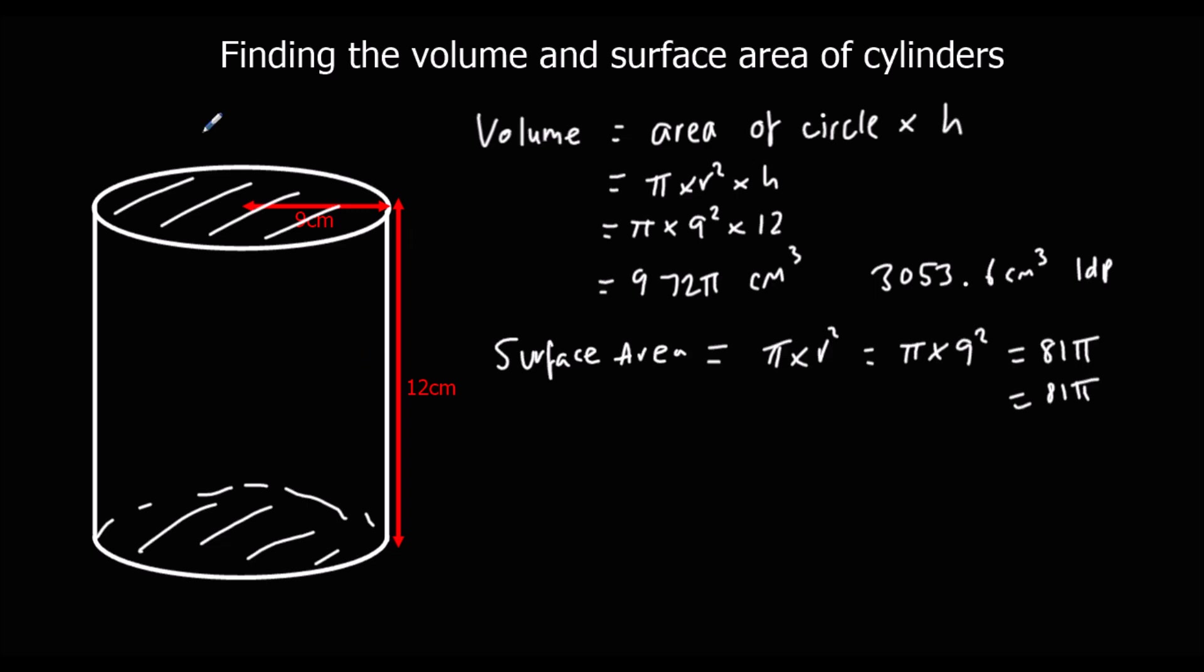This curved bit is actually a rectangle. If you imagine you've got a tin of soup or a tin of beans and you pulled the label off, the label would actually be a rectangle. So its height is 12, so we've got 12 times, and the length of it is the circumference of the circle. The circumference of the circle is pi times diameter, which is 18. So it's 12 times pi times 18, which is 216 pi.